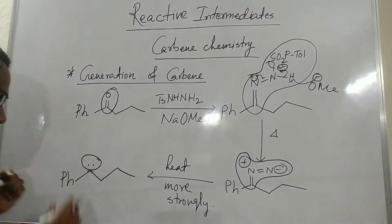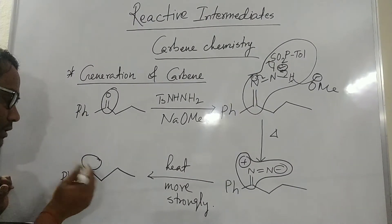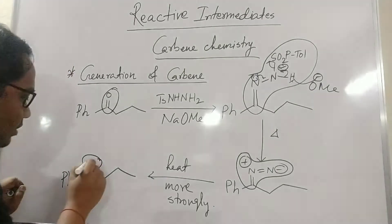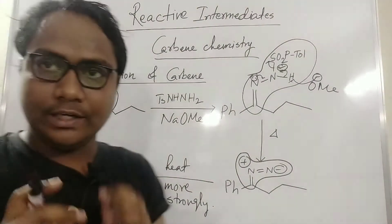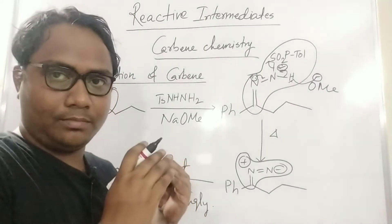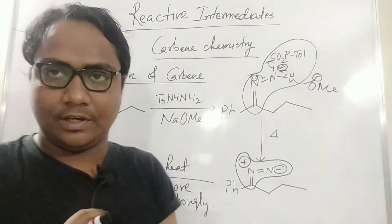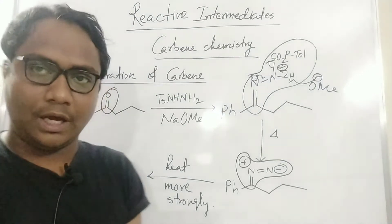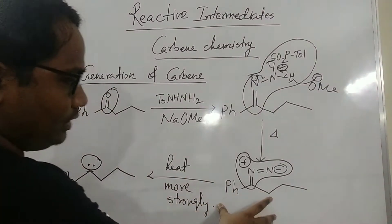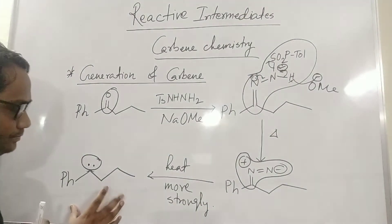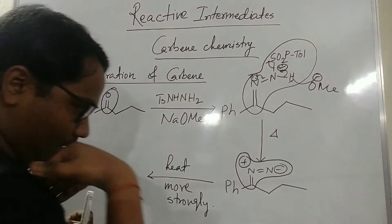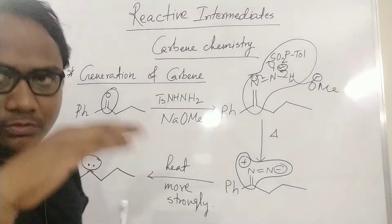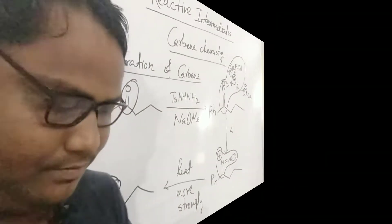We do not write the carbene intermediate with a minus sign — never write it as a carbanion. We write two dots because these electrons are distinguishable. In some cases, carbene shows paramagnetic behavior. So we write two dots. That is the main means of generation of carbene. Whenever you see a diazo compound and apply heat, it will definitely generate carbene.